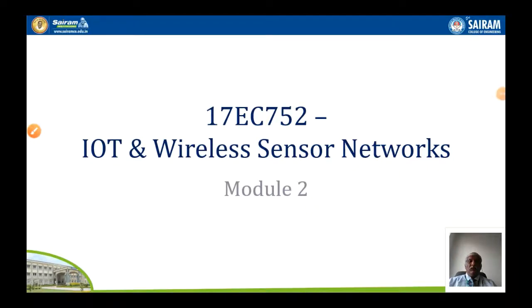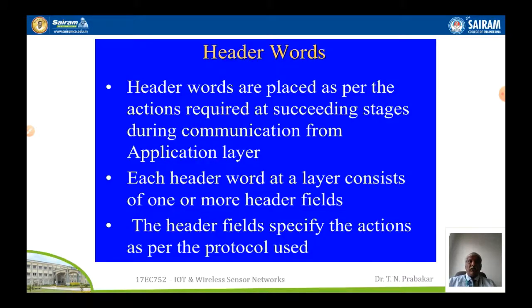Good morning all. We are getting into Module 2 of IoT and wireless sensor networks. Module 2 deals with the protocols that are useful in the internet. The protocols widely used are mainly TCP/IP, then RPL, then SIXLOWPAN, and all these protocols are useful for transmitting the data from the lower level — that is, from the sensor — to the upper level, that is, the internet.